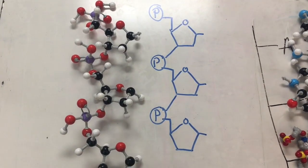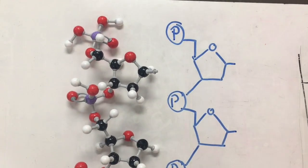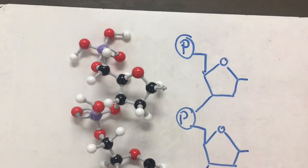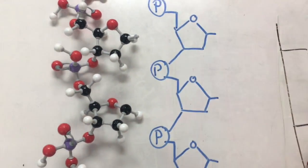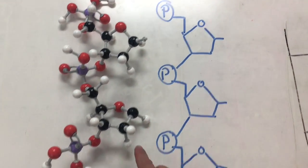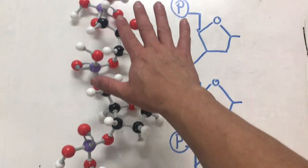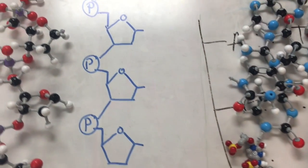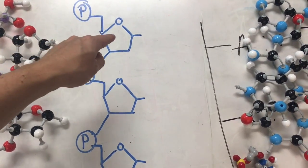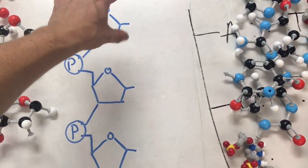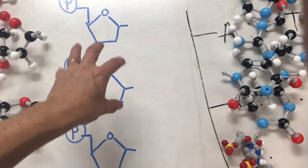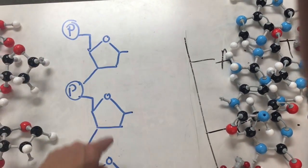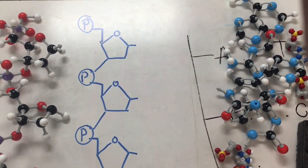Here I've taken the phosphates and sugars and connected them together to show how nucleotides form a chain. I've removed the nitrogenous bases so you can clearly see how the strand is built. The phosphate connected to a sugar is one part of a nucleotide — a nitrogenous base would attach to complete it. This would be one strand of the DNA molecule.